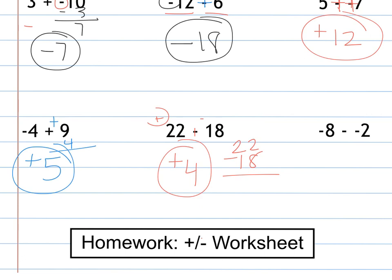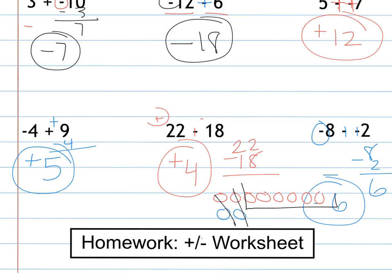Last one, negative 8 minus negative 2. Add the opposite. There are more negatives than positives, so our answer will be negative. 8 is 6 more than 2 for a negative 6. Always remember, you could show your visual. I have 8 of these, 2 positives. If I cancel them, how many are left? Negative 6.